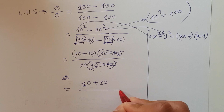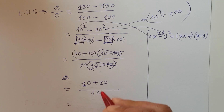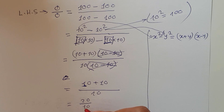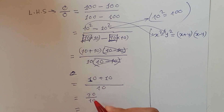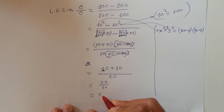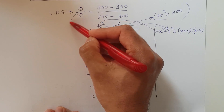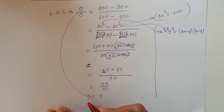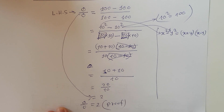What remains is 10 plus 10 over 10, which is 20 over 10, equal to 2. So I started from 0 over 0 and arrived at 0 over 0 equals 2. That means 0 over 0 is equal to 2 — proof!